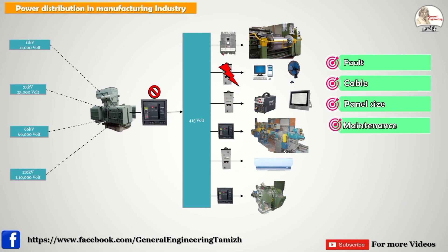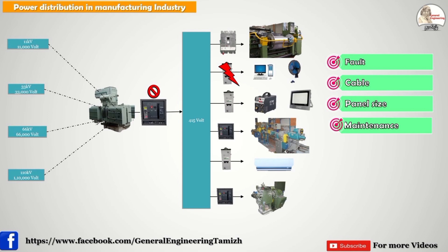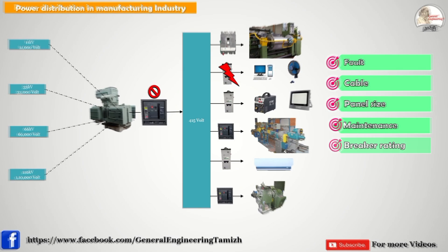The next scenario is maintenance. For example, if I need to service one breaker, I have to switch off the incomer breaker. If the incomer breaker is off, the total plant supply is disconnected. I cannot stop the total plant just to service one breaker. So from a maintenance perspective, this system is also not suitable.